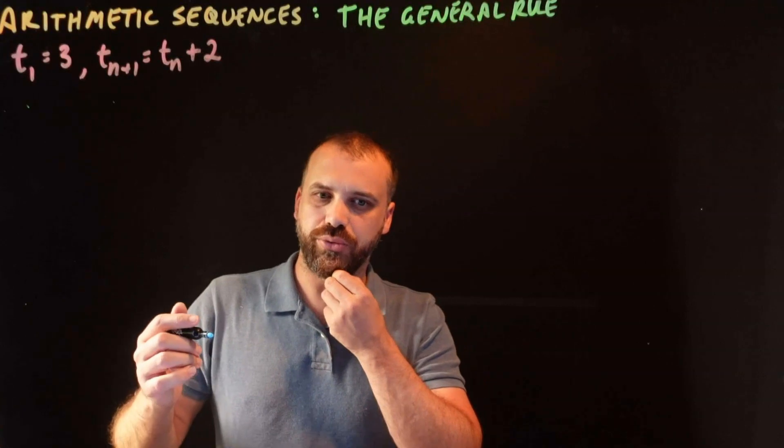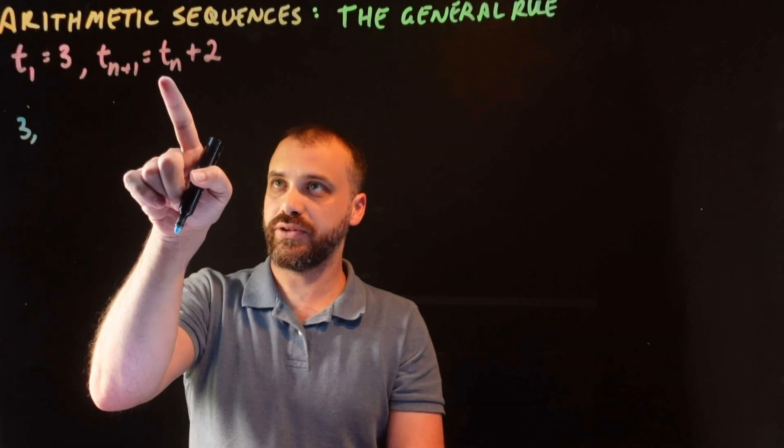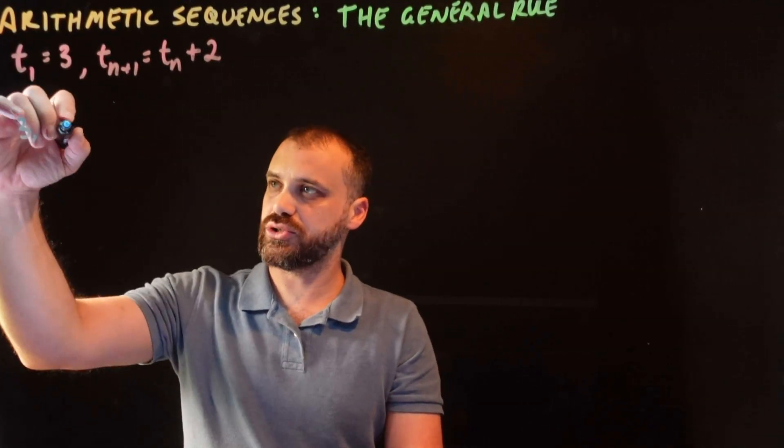Watch how I have to use this formula. The first term is 3, and then the next term will be whatever the first term is, plus 2, so that's 5.